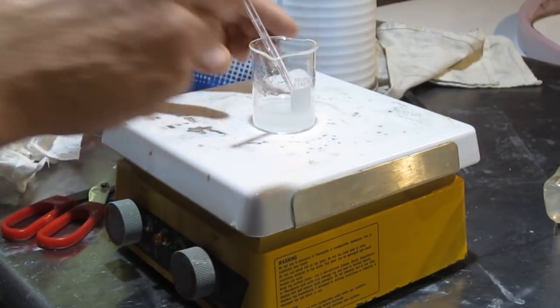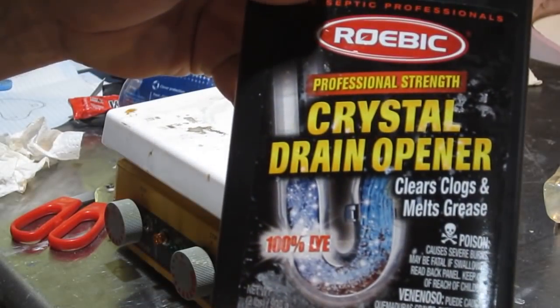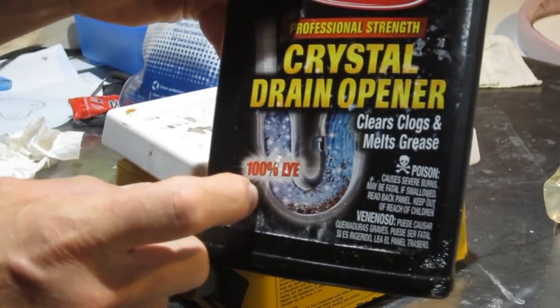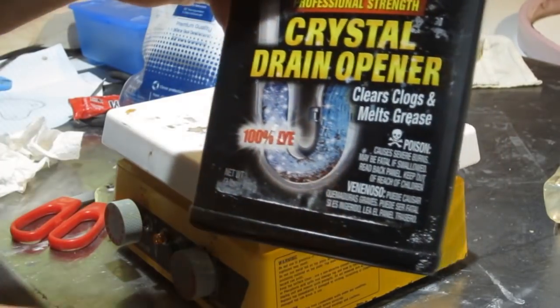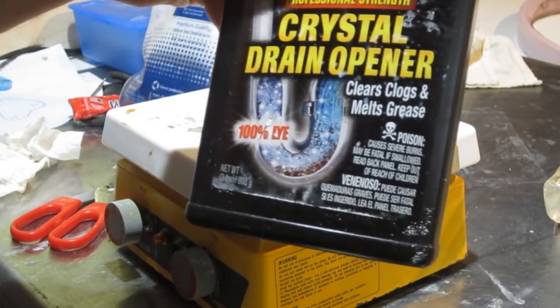So right now I've got 10 mils of water, 8 grams of sodium hydroxide. You can get this sodium hydroxide in this format. 100% lye. Look for that. You don't want anything else in it. Sometimes they do have other stuff. It has to be pure sodium hydroxide.